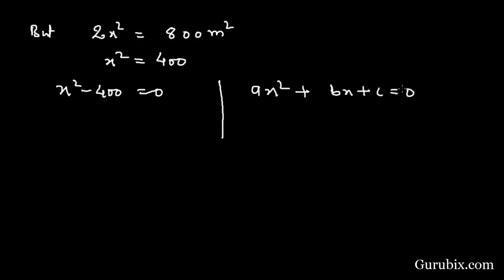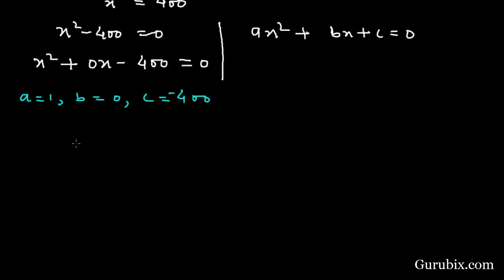Now we shall compare this quadratic equation with the standard form of a quadratic equation, that is ax squared plus bx plus c equals 0. So here we have x squared plus 0x minus 400 equals 0. If we compare with the standard form, therefore a is 1, b is 0, and c is minus 400.